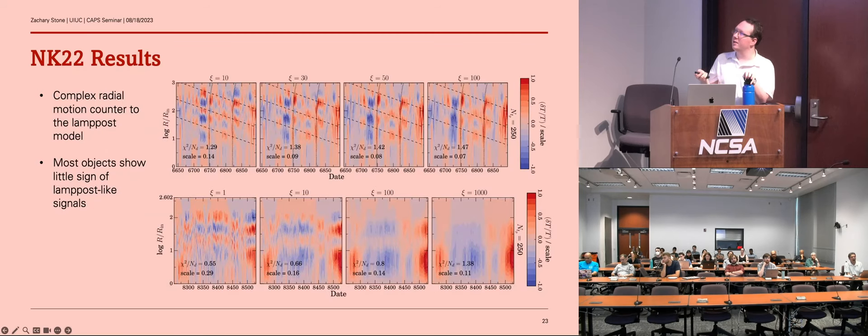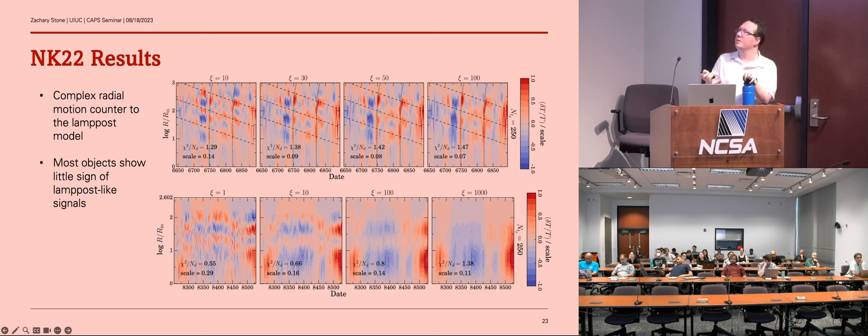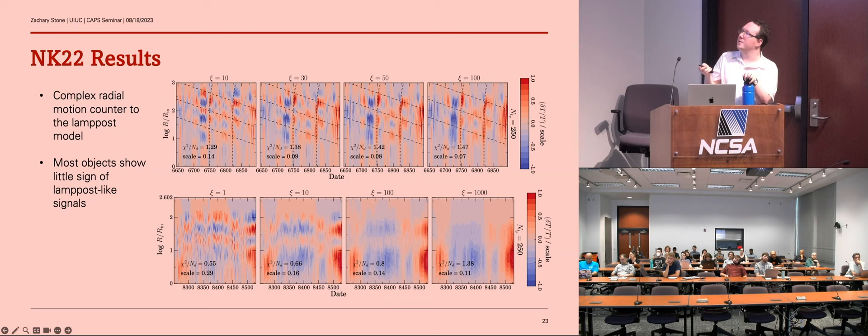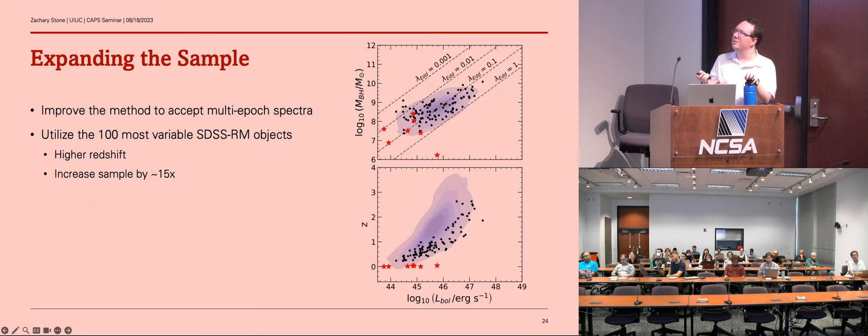So Neustadt and Kochanek had a sample of about 10 local AGN, and they found this. So they saw that there was complex radial motion counter to the lamppost model. Normally you'd see these very vertical stripes if it was the lamppost model, like here, but they don't see that. They see a lot of noise and some semblance of inward moving signals that they trace here. In this case, there's also sort of wandering fluctuations that move up and down throughout the disk. So it's very complicated what's going on here. It's also very qualitative. It's hard to get sort of quantitative analysis of this, but you can tell it's definitely not only lamppost.